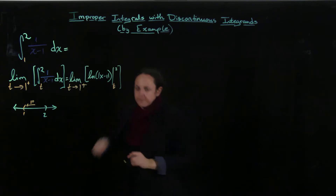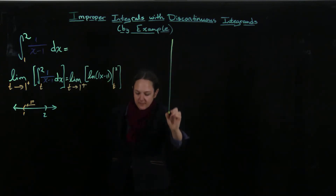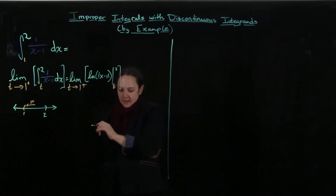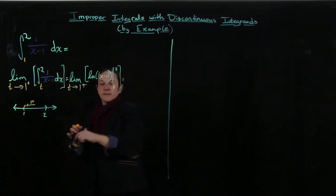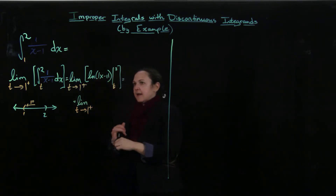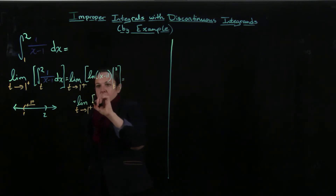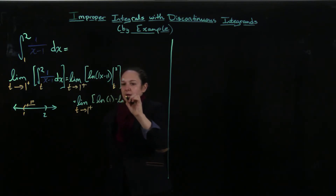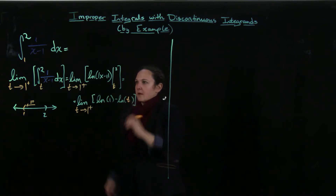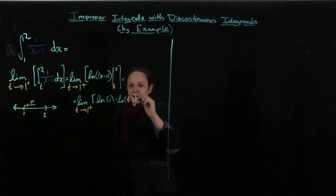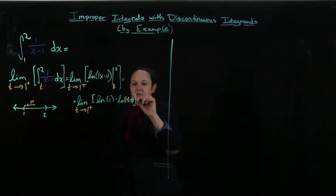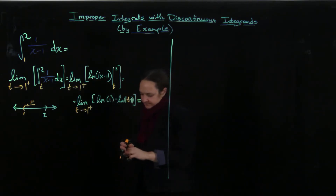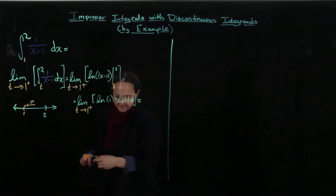This is going to equal the limit as T approaches 1 from the right-hand side of the natural log of — so we put in 2 and we get 1, so we get the natural log of 1 minus the natural log of |T minus 1|. So the natural log of 1 is going to go to 0.